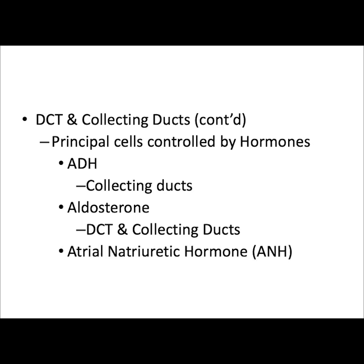In response to elevated blood pressure, the atria of the heart release ANH, or atrial natriuretic hormone. This inhibits aldosterone, thus inhibiting sodium reabsorption. PTH, released by the parathyroid glands, binds to principal cells located primarily in the distal convoluted tubule. Once it binds to its receptor, PTH increases calcium reabsorption at the kidneys.